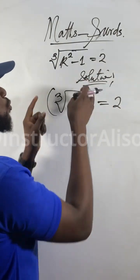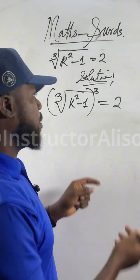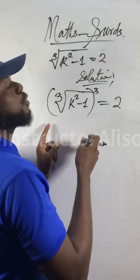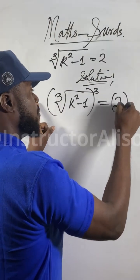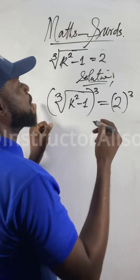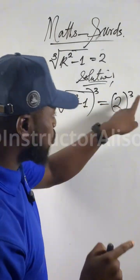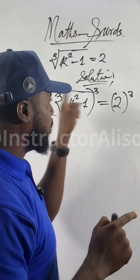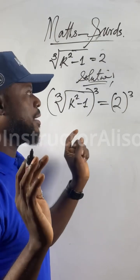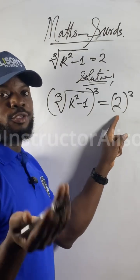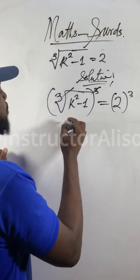If you know how to balance everything, you bring the cube to this side and bring it to the other side as well. The reason we bring the cube is to cancel the cube root. You introduce it on the left and the right, and then this guy will cancel out with this one.